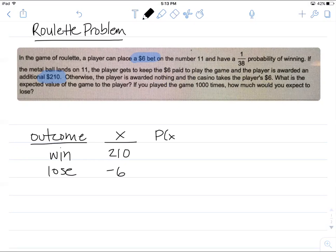The third column will be the probabilities associated with each outcome. The probability of winning is 1 over 38 and the probability of losing is 37 over 38.